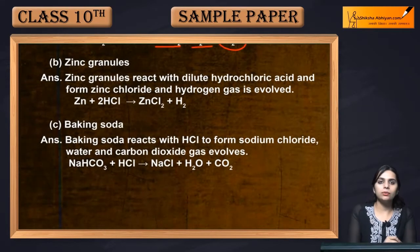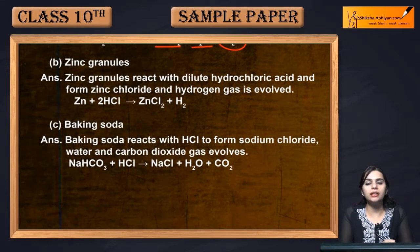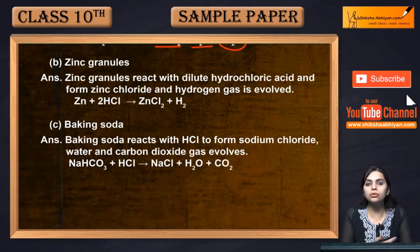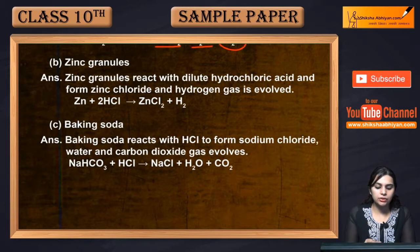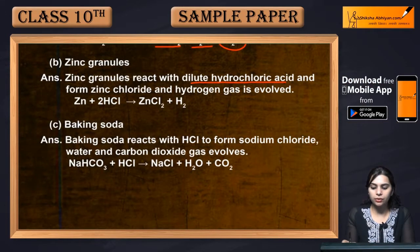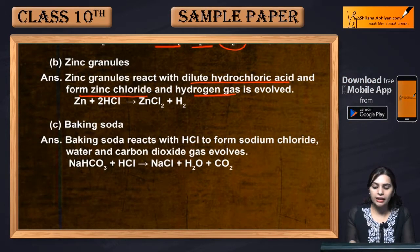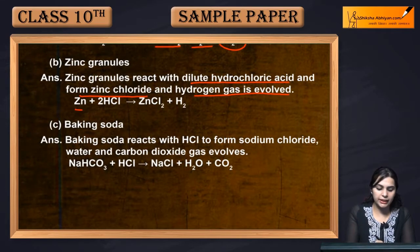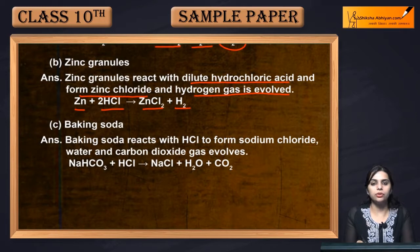Next, zinc granules react with dilute hydrochloric acid. Zinc is a metal, so which gas will evolve? Hydrogen gas. Zinc granules react with dilute hydrochloric acid to form zinc chloride and hydrogen gas is evolved: Zn + 2HCl → ZnCl2 + H2↑.